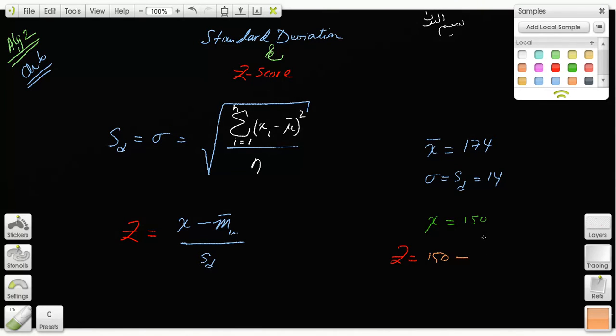Well, the z-score would be calculated for them like this. Z-score would be 150 minus 174, yeah that's the mean, divided by the standard deviation, 14.